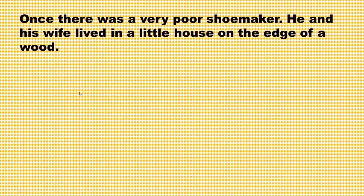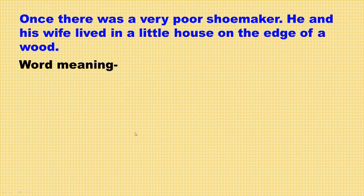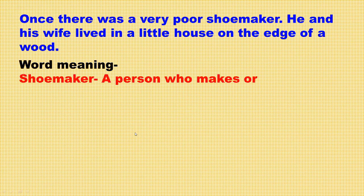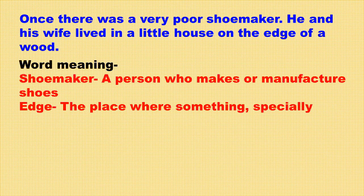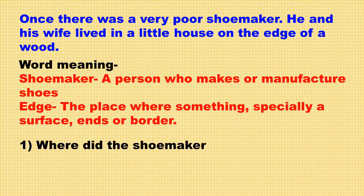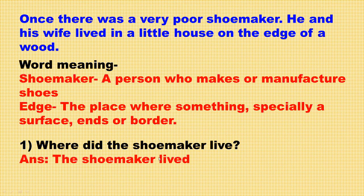Once there was a very poor shoemaker. He and his wife lived in a little house on the edge of a wood. A shoemaker means a person who makes or manufactures shoes. Edge means the place where something, especially a surface, ends — border or boundary. Where did the shoemaker live? The shoemaker lived in a little house on the edge of a wood.